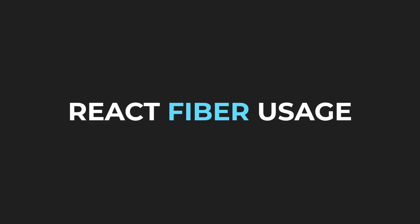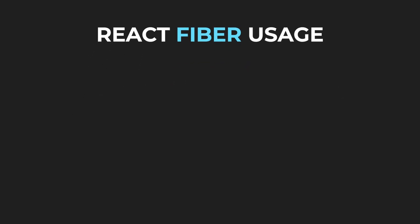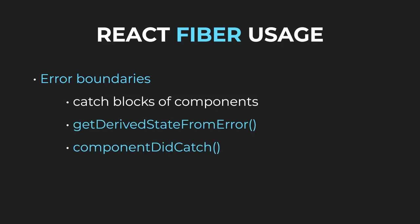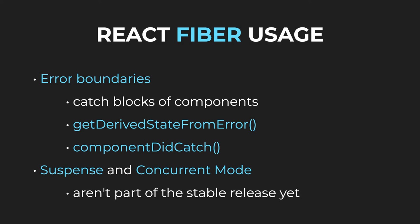Finally, let's talk about the current uses of fiber. One of the famous and already implemented features possible only because of React Fiber are error boundaries. Previously, when an error happened somewhere — for example inside the render method — React got completely messed up internally. Error boundaries act like catch blocks for components and come in the form of two methods: getDerivedStateFromError and componentDidCatch. Fiber also allows features like Suspense and Concurrent Mode to exist. Sadly, those features are so complicated that they aren't part of the stable release just yet, but there exists an experimental release you can play around with.